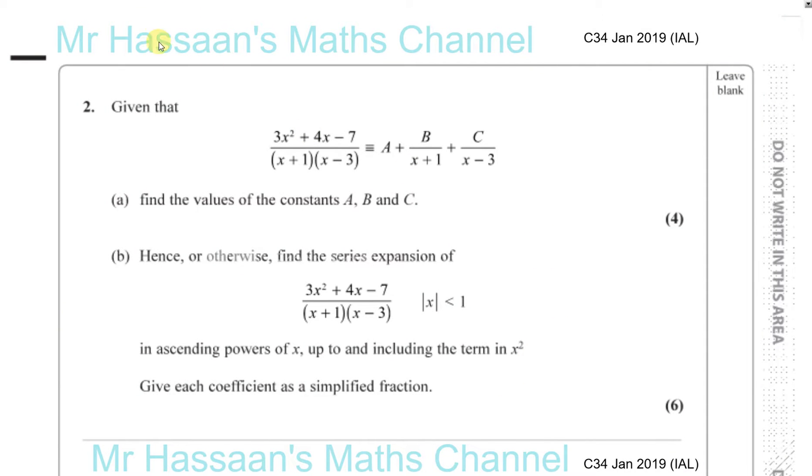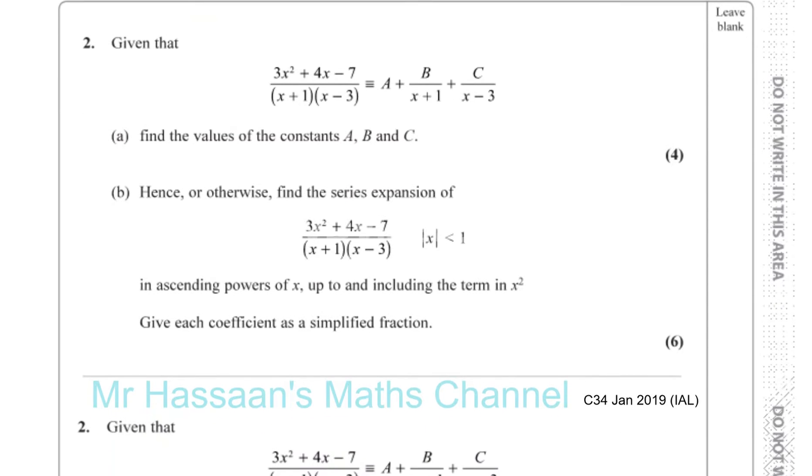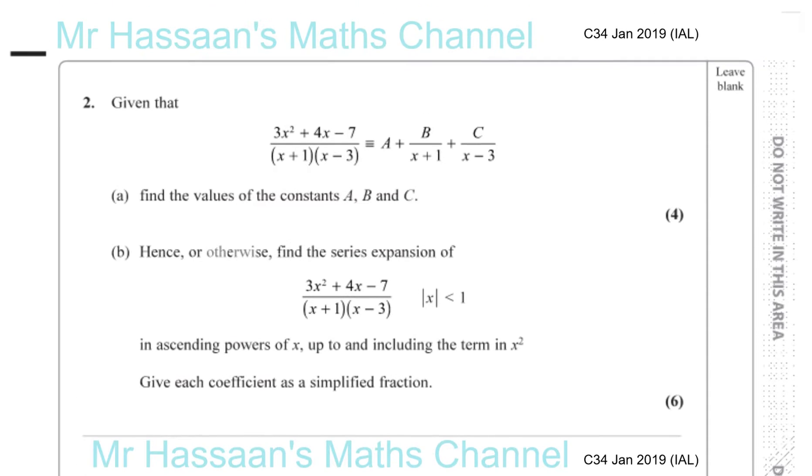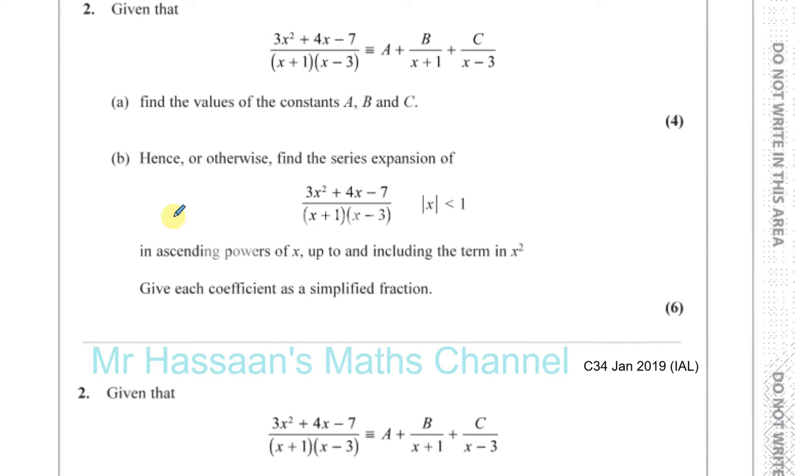Okay, so we have here question number two from the C34 paper of January 2019 IAL. First of all, to split this one fraction into separate fractions, you need to separate the fractions out. They've given us the form that they want us to put it in, and we have to find the values of the constants A, B, and C.